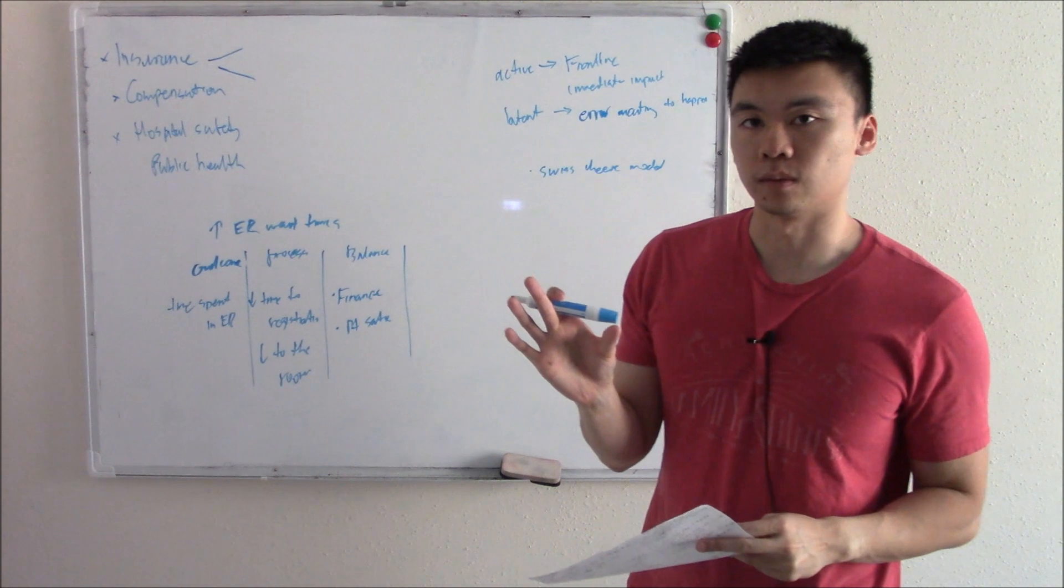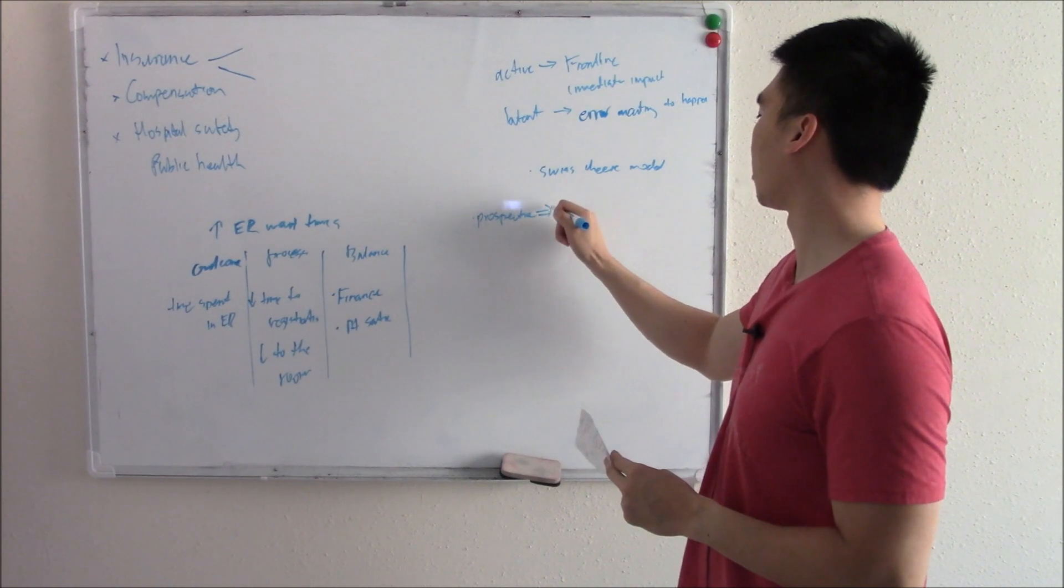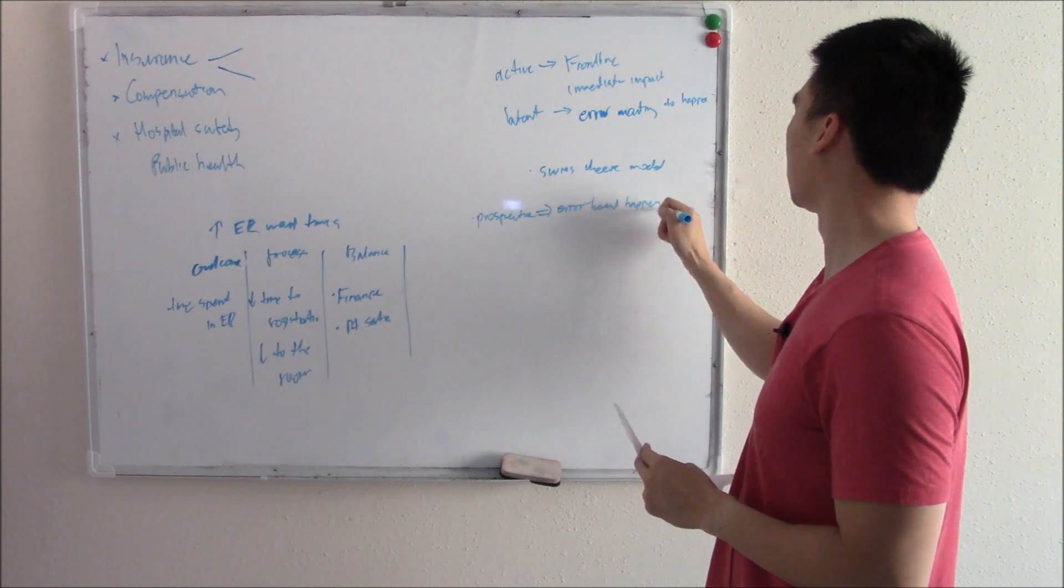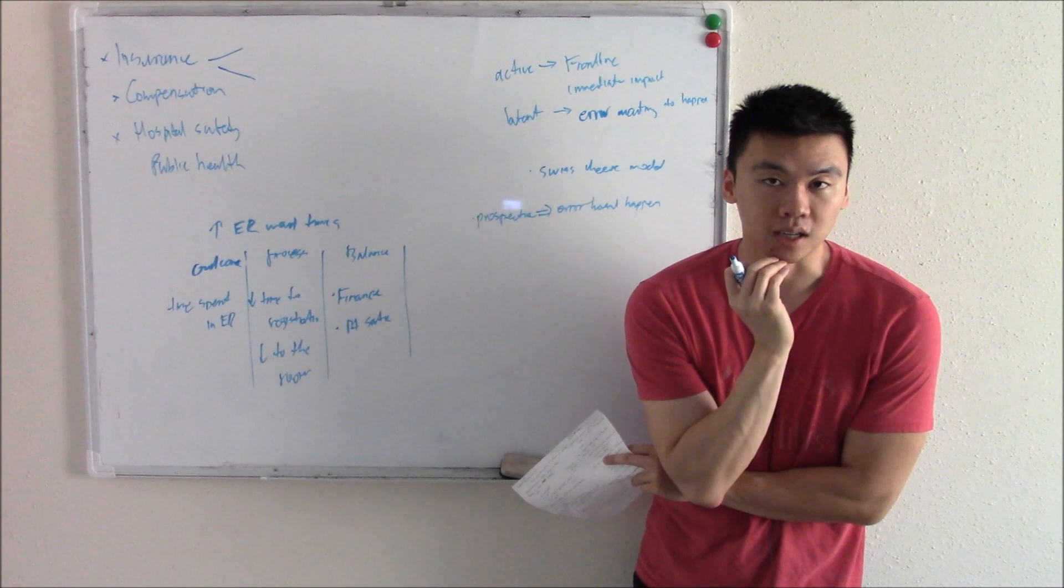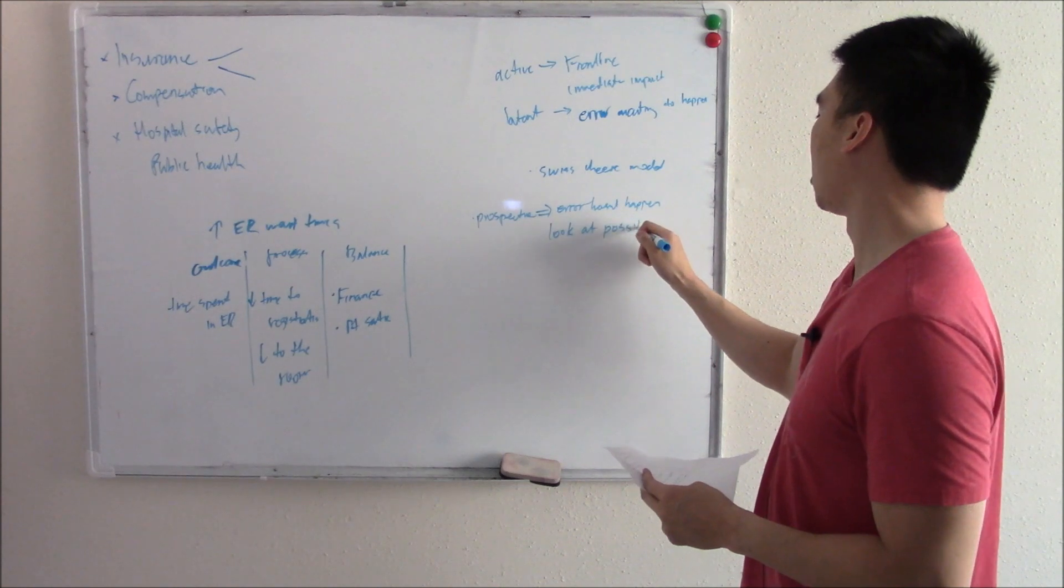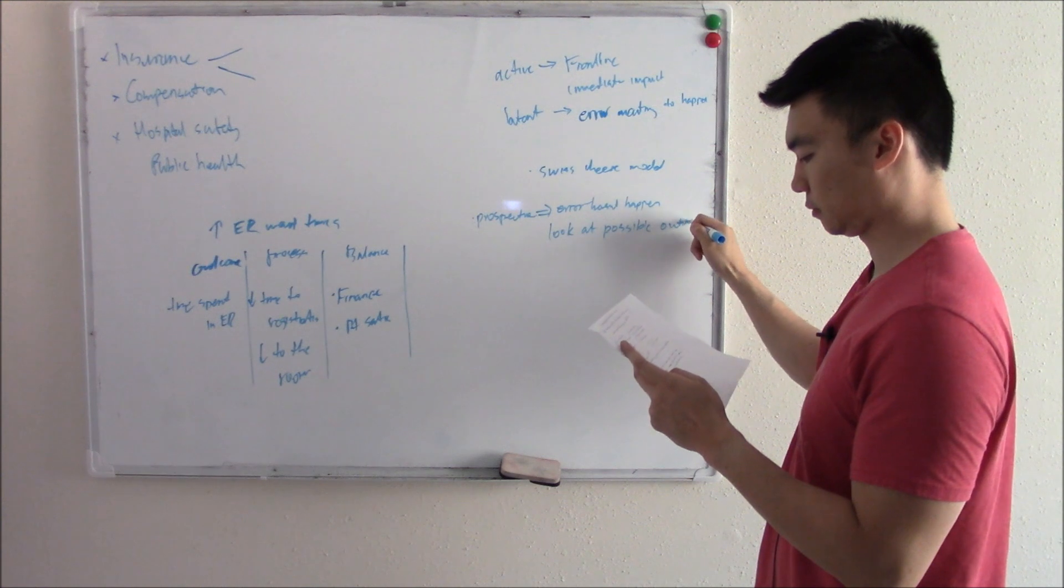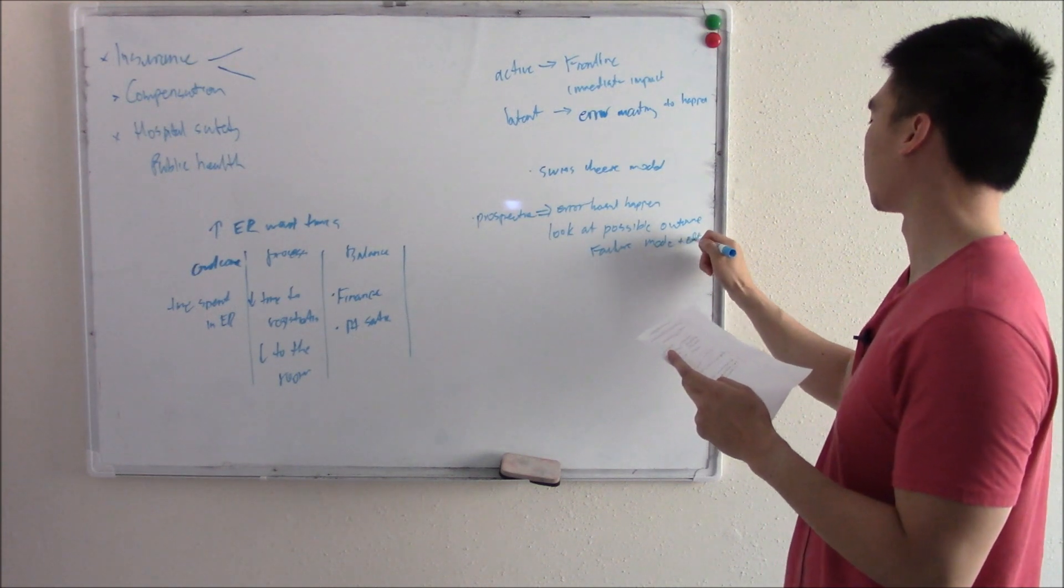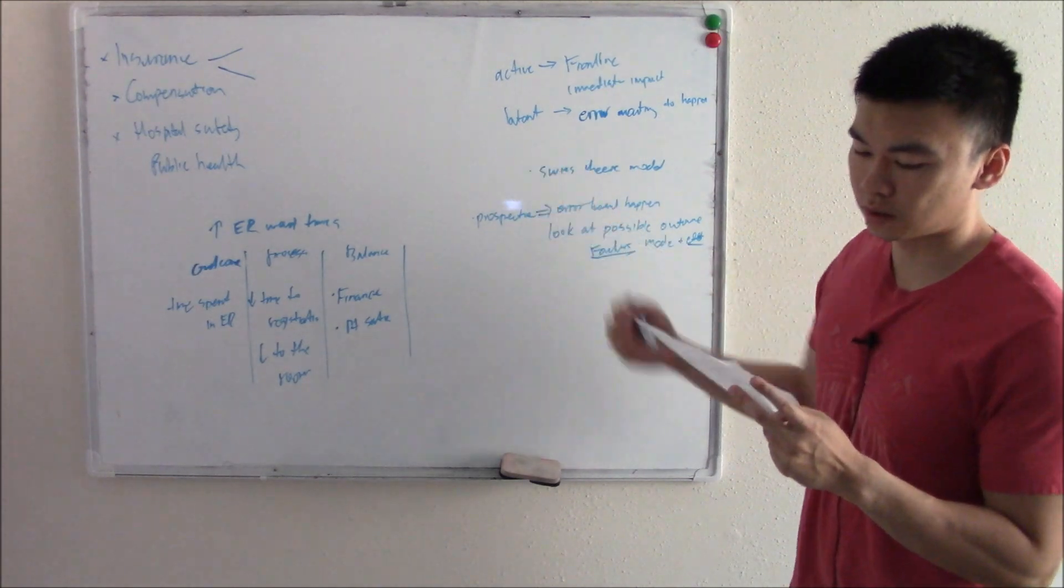We like to try and identify these problems. And one of them we can do prospectively where the error hasn't happened. Error hasn't happened. But we're looking at our systems, thinking of all the different outcomes and saying, okay, what might possibly happen? How can we prevent that? We call this failure mode and effect. What happens if something fails and what would be its effect? We're looking forward in the future.